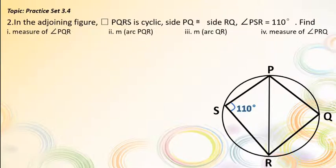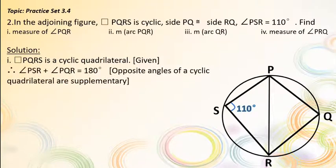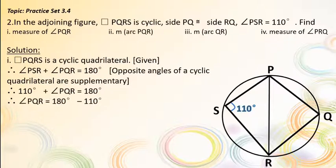Q2. In the adjoining figure, quadrilateral PQRS is cyclic. Side PQ is congruent to side RQ. Angle PSR = 110°. Find: measure of angle PQR, measure of arc PQR, measure of arc RQ, and measure of angle PRQ. Solution: Since PQRS is a cyclic quadrilateral, opposite angles are supplementary. Therefore, angle PSR + angle PQR = 180°. So 110° + angle PQR = 180°. Therefore, measure of angle PQR = 70°.